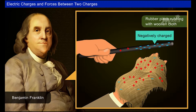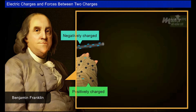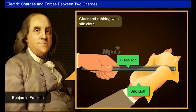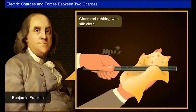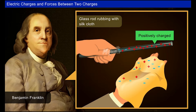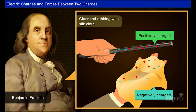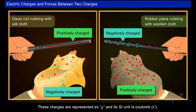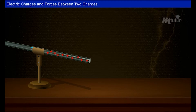He then rubbed a glass rod with silk. The glass rod lost negative charges and became positively charged, while the silk cloth gained those negative charges and therefore became negatively charged. These charges are represented as q and the SI unit is coulomb (C).